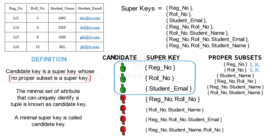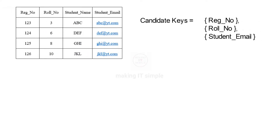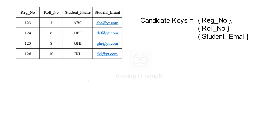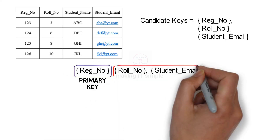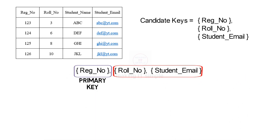So in this student table, the following are the candidate keys. When we look at the set of candidate keys we understand why they are called minimal super keys — super keys with unnecessary attributes are ignored. The minimal set of attributes that can uniquely identify a tuple are selected as candidate keys. Out of all these candidate keys one will be selected as primary key, and all remaining candidate keys that are not selected are said to be alternate keys.